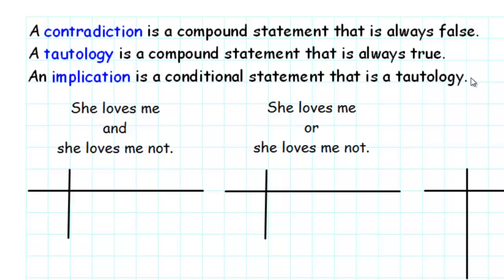Usually when we make a truth table, we get a combination of trues and falses, but there are a couple of special cases with special names. A contradiction is a compound statement that is always false, and a tautology is a compound statement that is always true. We also have an implication, which is a conditional statement that is a tautology. Let's consider the following statements.